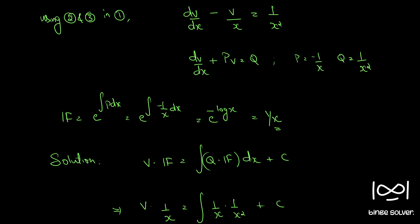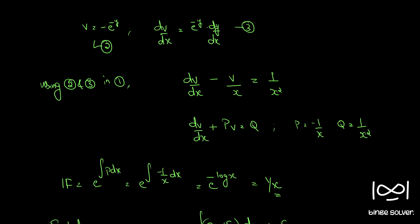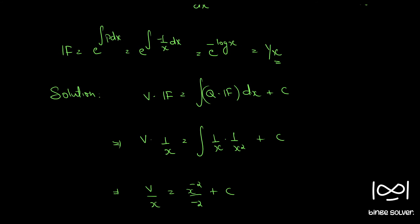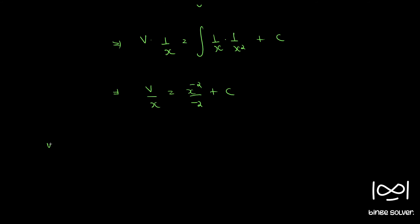Using equation 2, v equals minus e raised to minus y. Back-substituting, minus e raised to minus y divided by x is equal to minus 1 by 2x squared plus c.